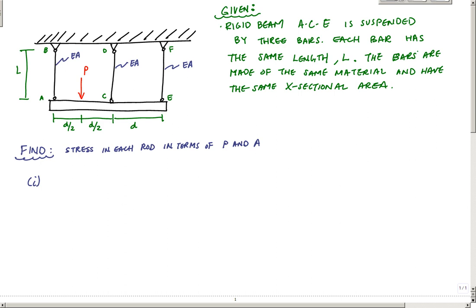Alright, so we're here. I've got a mechanics and materials problem. This is a rigid beam ACE that's suspended by three bars. Each bar has the same length L, and the bars are made of the same material, meaning that they all have the same modulus of elasticity E and have the same cross-sectional area.